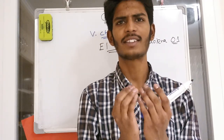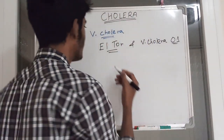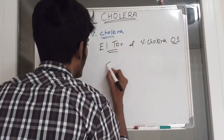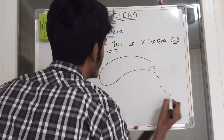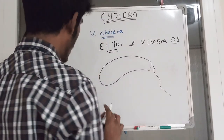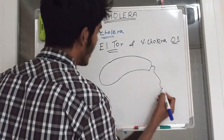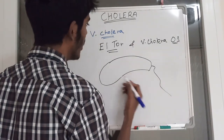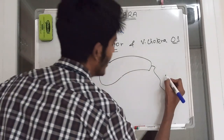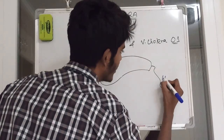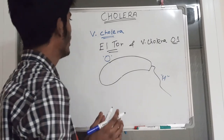Let's discuss how this bacteria looks. This is a comma-shaped bacteria which has two antigens. It has flagella and a body. The body has somatic antigen O and flagellar antigen H. These are the antigens of Vibrio cholerae.